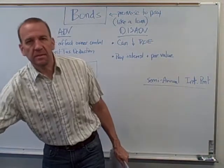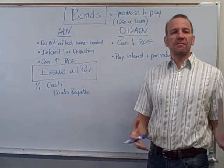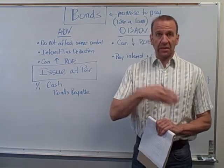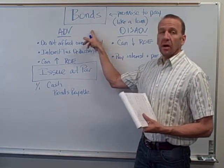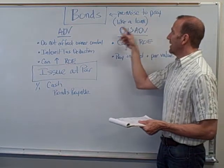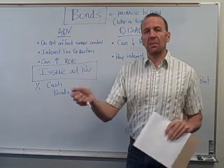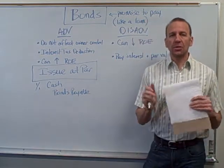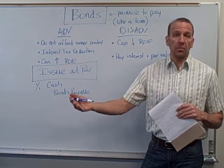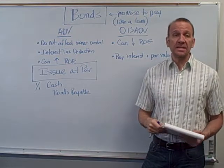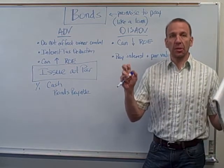Bonds are debt for a corporation — a way for them to get money to finance their business. They can get debt through selling shares of preferred stock or common stock, or they can sell bonds. It's a promise to pay, like a loan. A person purchases a bond from a corporation and receives a legal document saying they'll be paid back. The terms are set in the indenture, which is the agreement that outlines the terms of the bond.